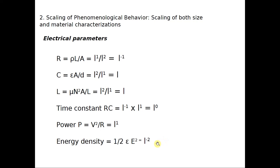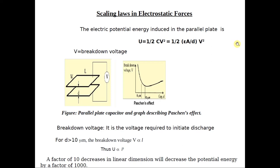That means if I reduce the size by a factor of 10, the energy density varies as 1 divided by L squared — that is 1 divided by 100. So if I reduce the size of the material, energy density is going to increase because it is an inversely proportional relation.